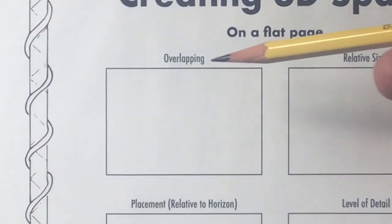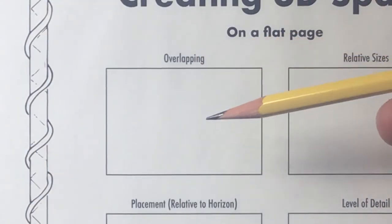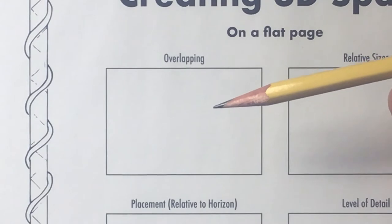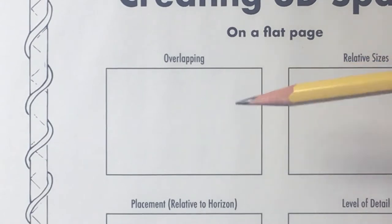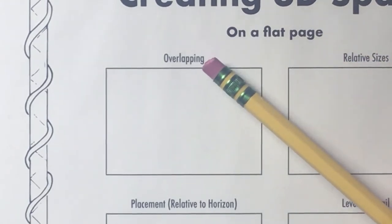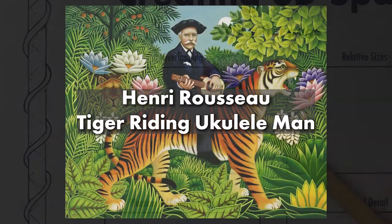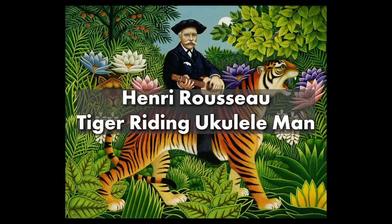As we zoom in and look at these one at a time, we'll start with overlapping. To get a good feel for what overlapping looks like, let's take a look at Henry Rousseau's Tiger Riding Ukulele Man.